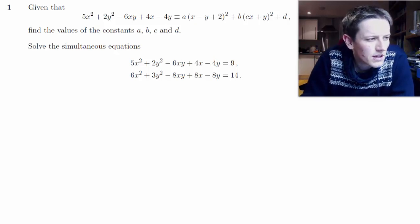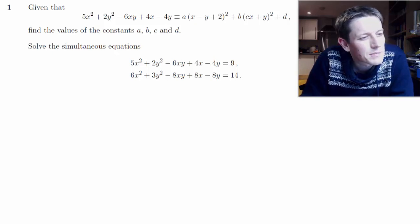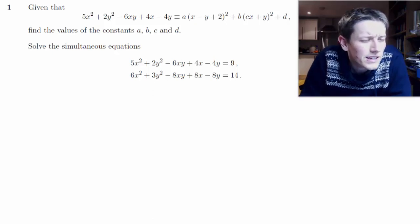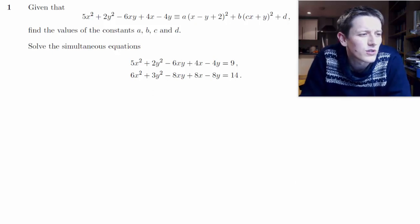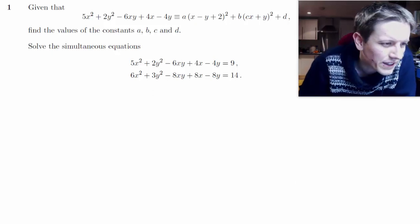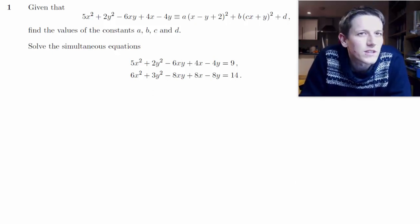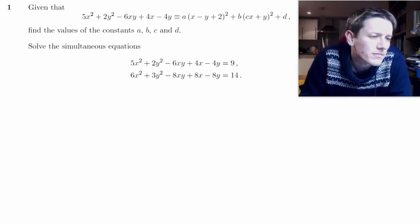So it says given that this function on the left hand side can be written in this form on the right, find the constants A, B, C and D. We're doing that in order to then go on to later solve these simultaneous equations, but mainly we'll just follow the instructions and get on with it.